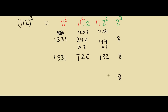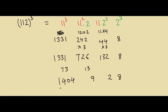Now adding them all together: 8, then 2 with carry-over 13, then 13 added together gives 9 with carry-over 73, then 4, 0, 4, and 1. So the answer is 1,404,928. I hope this video helps and I'll see you in the next video.